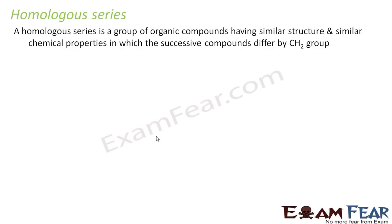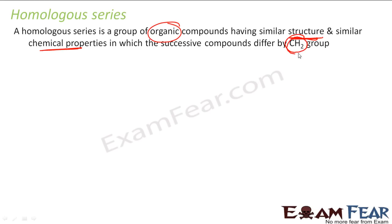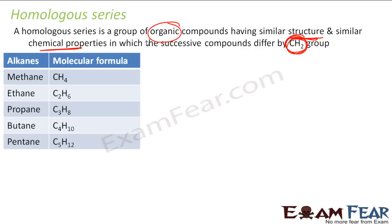Now we will discuss the Homologous Series. So what is Homologous Series? It is a group of organic compounds. They have similar structure — similar structure, not the same — and similar chemical properties. Chemical properties are almost similar. But the successive compounds differ by CH2; they differ only by CH2.